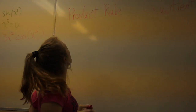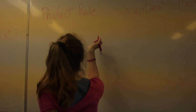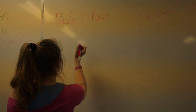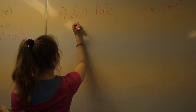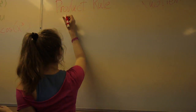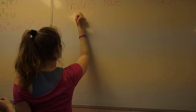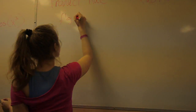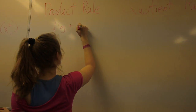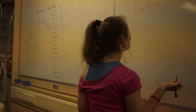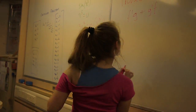Hey girl, product rule is a handy useful tool. When you got two mixed terms, this is easy to learn. F prime G plus G prime F. Go right, don't go left.